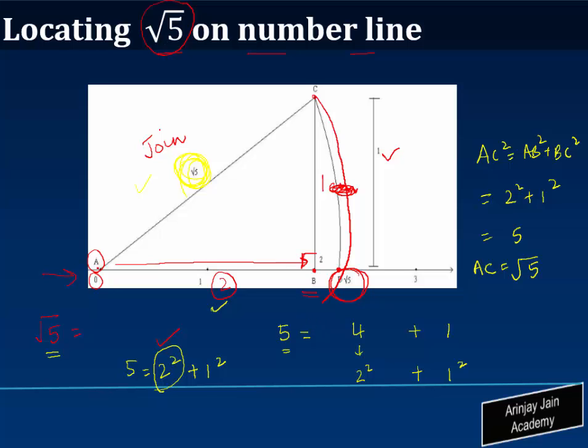Because we have taken this as the radius and we know that once the radius moves into a circular form, the point where it cuts is the equal distance from A. So that's how you locate root 5 on the number line.